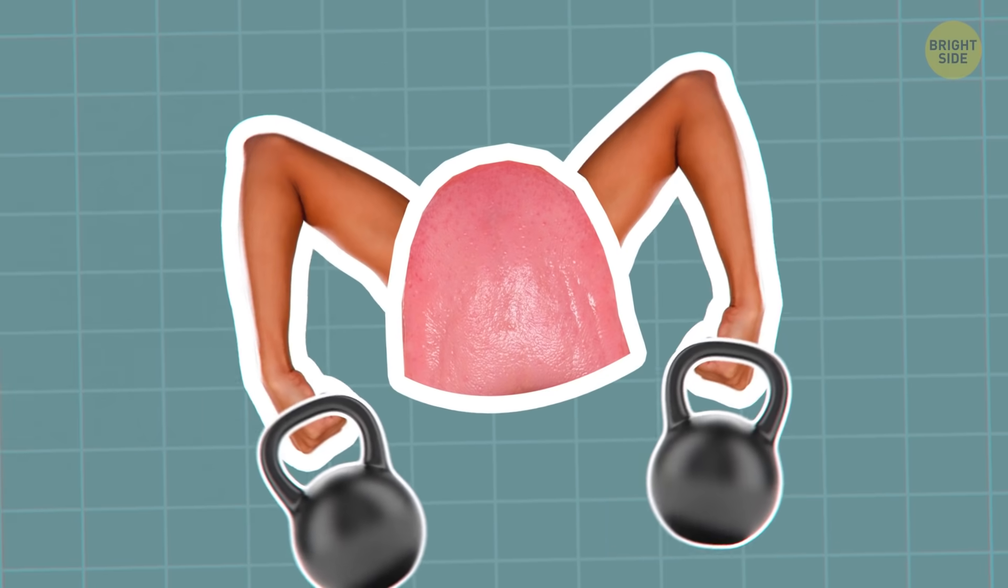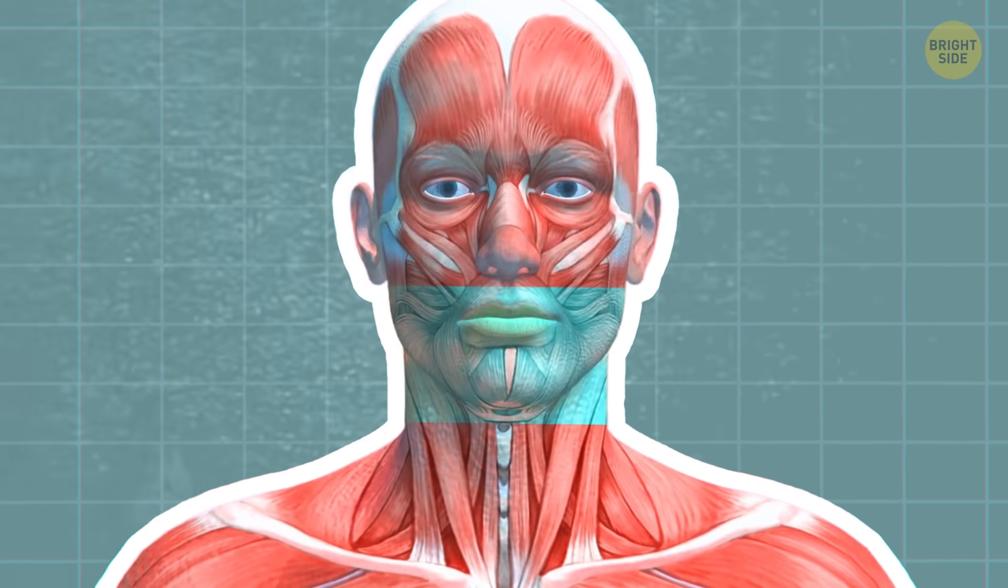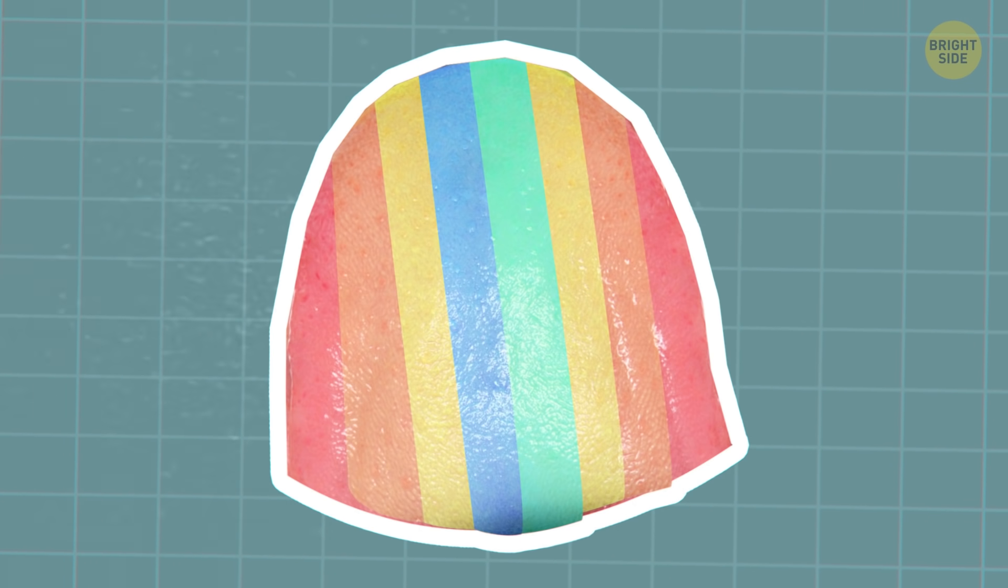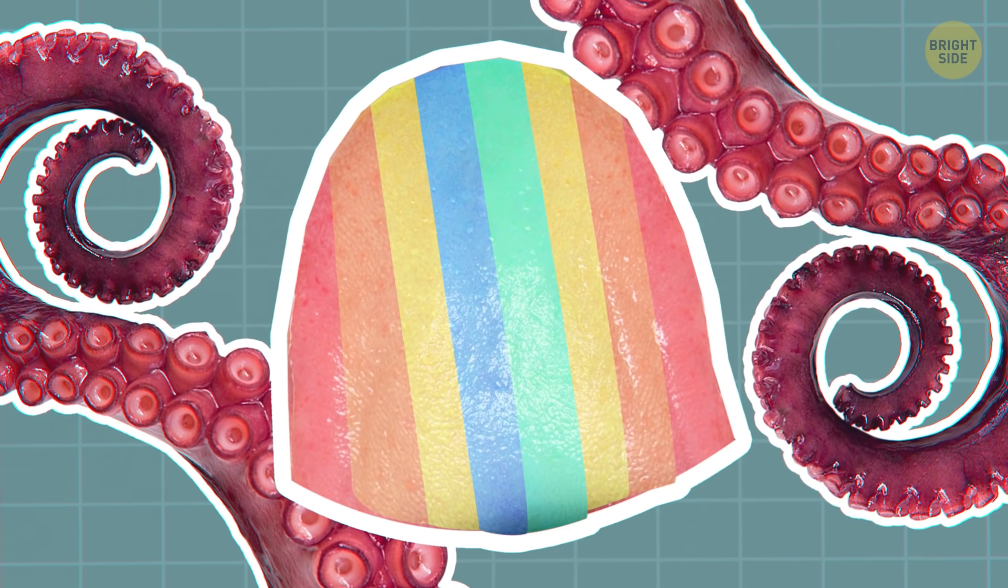Contrary to popular belief, the tongue is not the strongest muscle in your body. That would be your jaw muscle. Plus, the tongue isn't technically a muscle. It's an octopus tentacle-like structure.